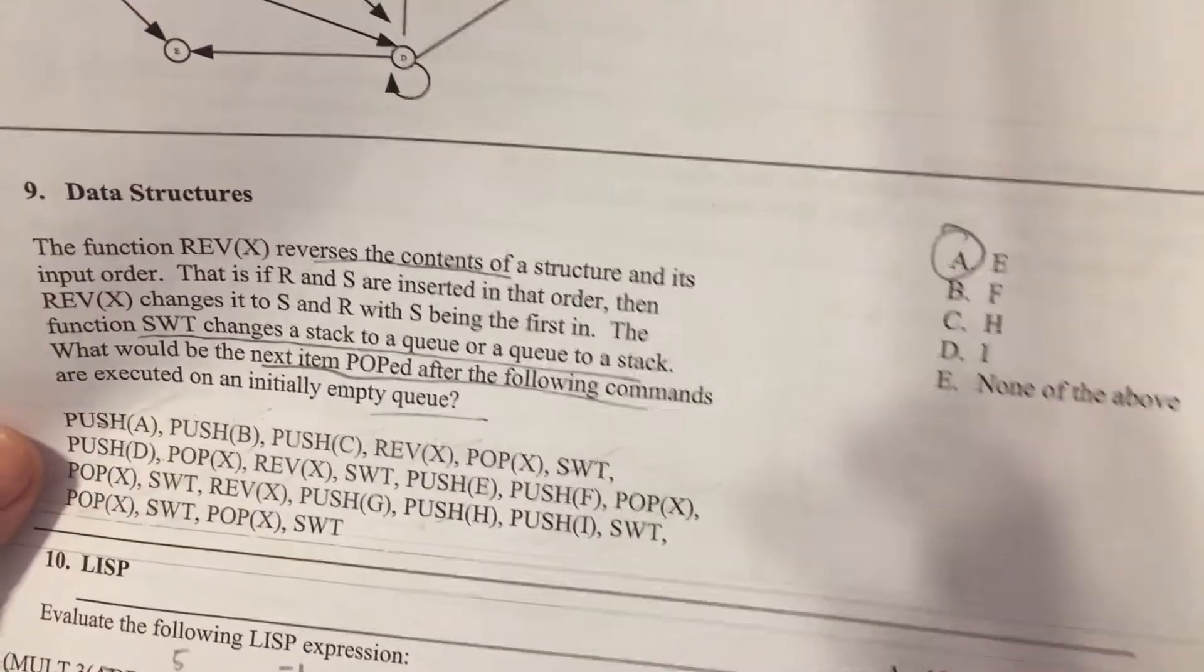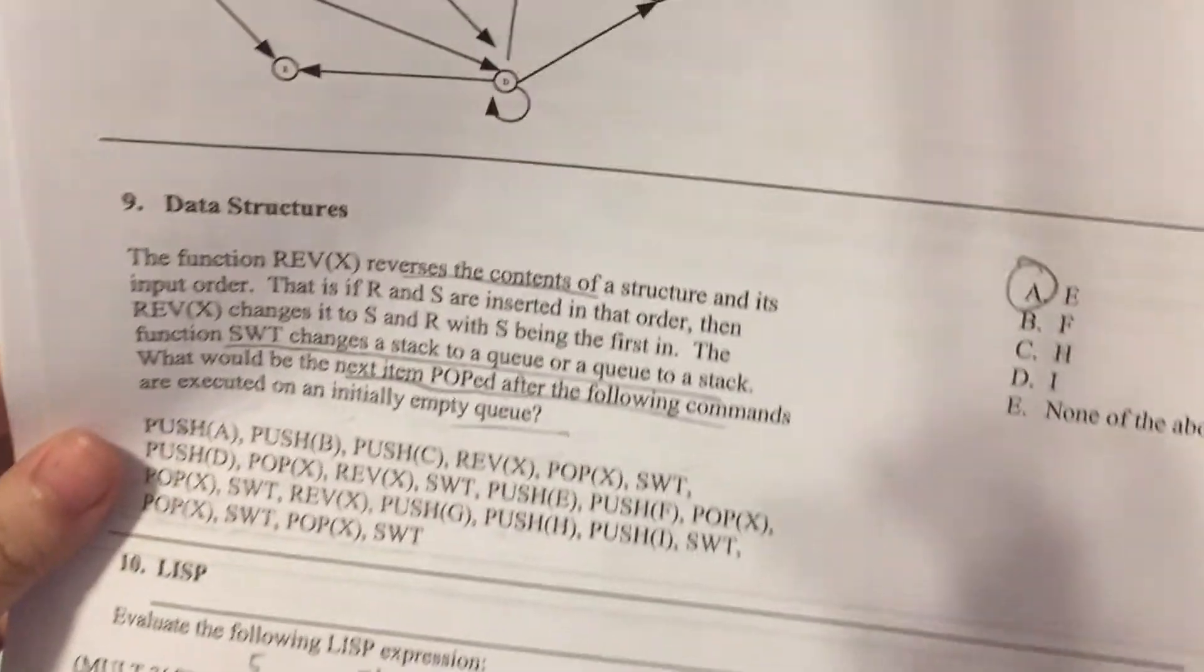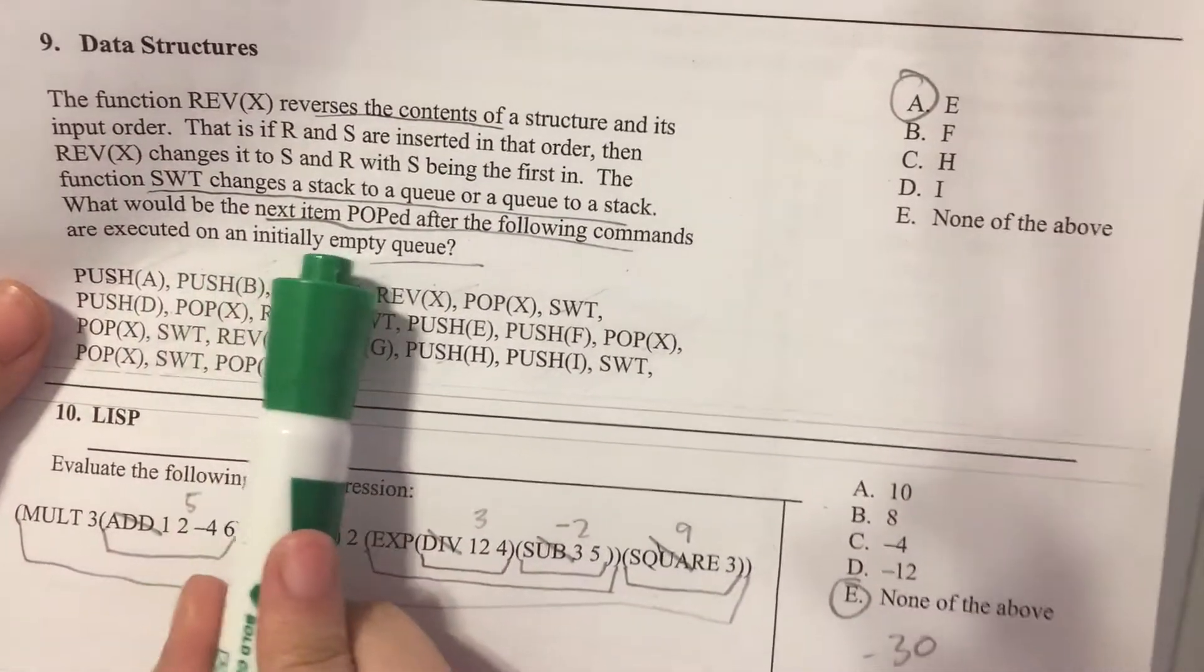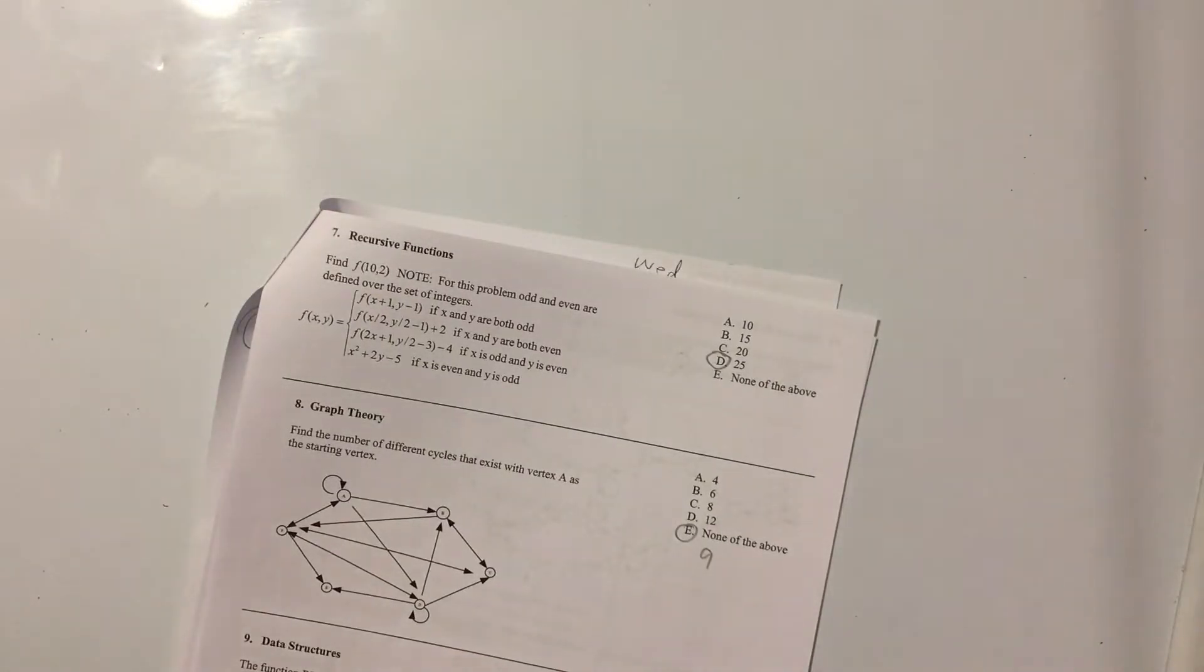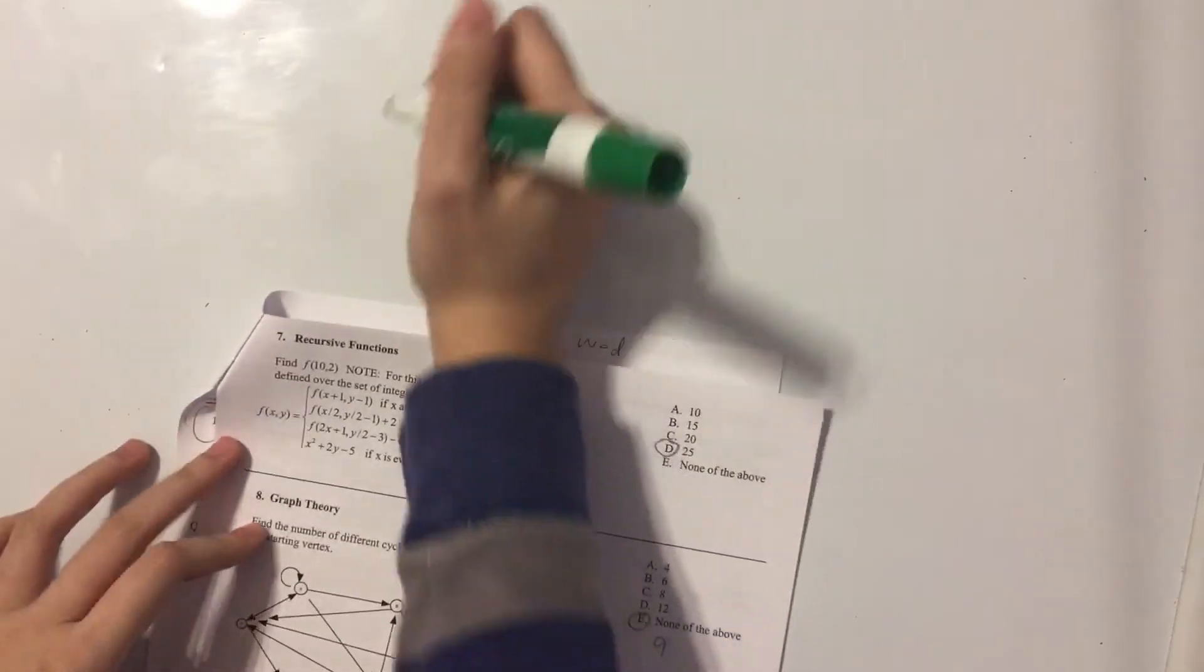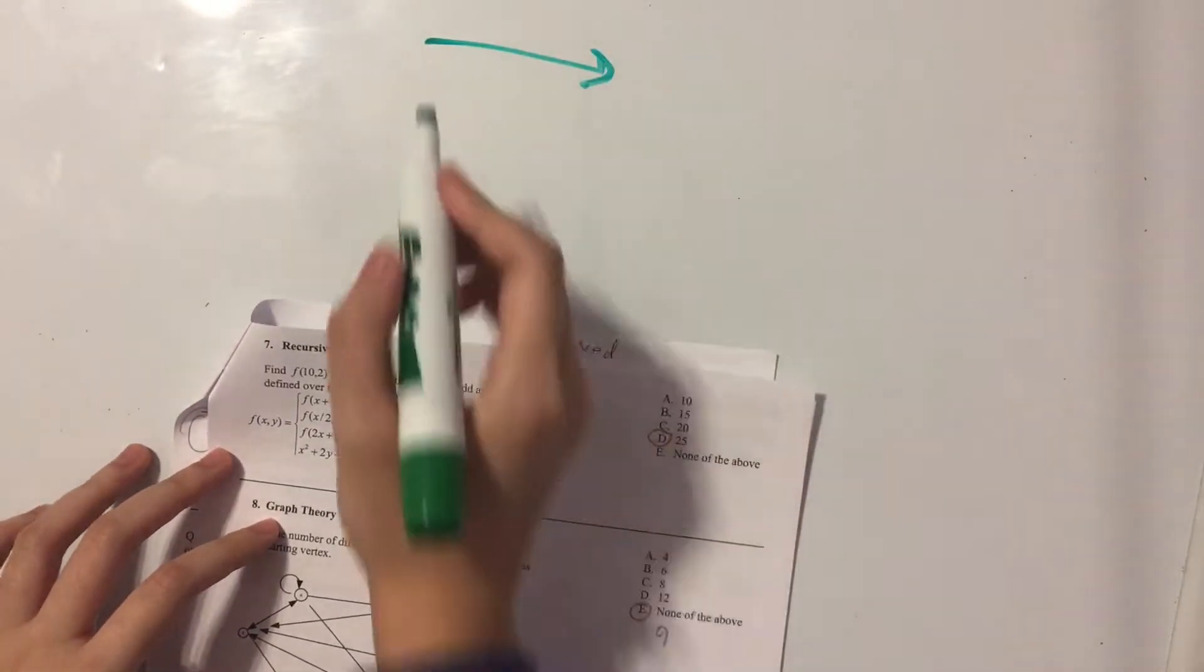So we just have to follow these commands and be very careful, and it's saying that it's an initially empty queue. So queues are kind of like lines. Whoever gets there first will be served first. And I like to write these from left to right.